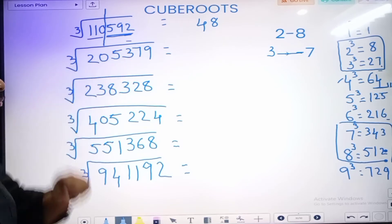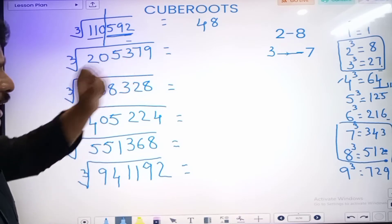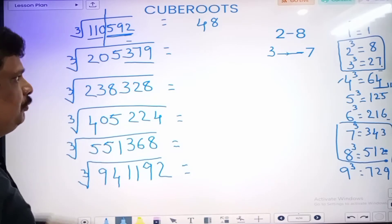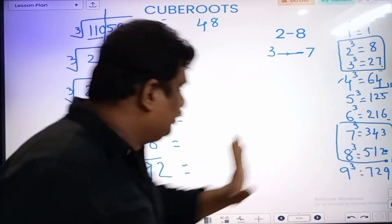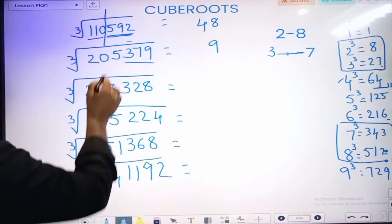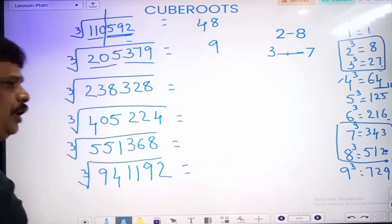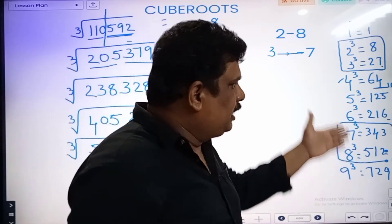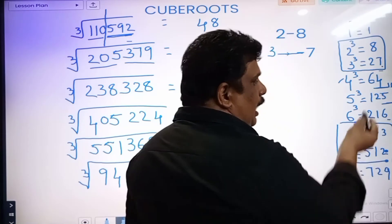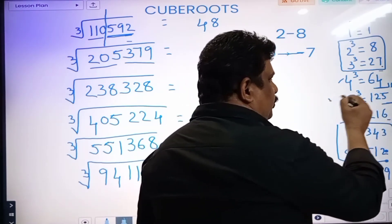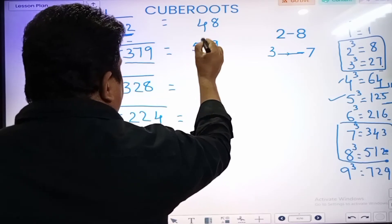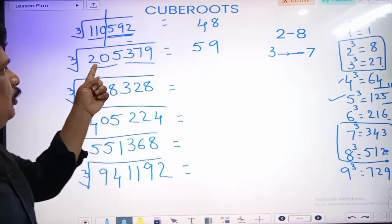Next, cube root of 205,379. 3 digits, 1 set. Last digit 9. 9 is 9. So answer, last digit 9. In the remaining 3 digits: 205. 205.